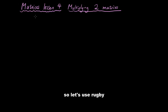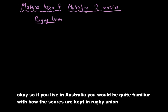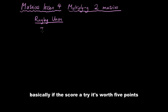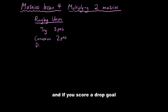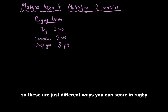So let's use rugby union as an example. If you live in Australia, you would be quite familiar with how the scores are kept in rugby union. Basically, if you score a try, it's worth five points. If you score a conversion, it's worth two points. And if you score a drop goal, it's worth three points. So these are just different ways you can score in rugby.